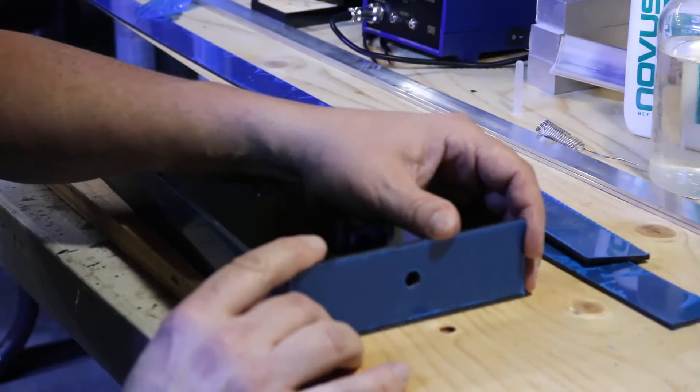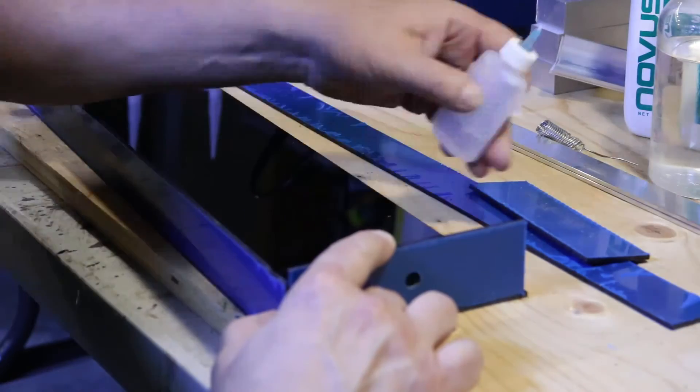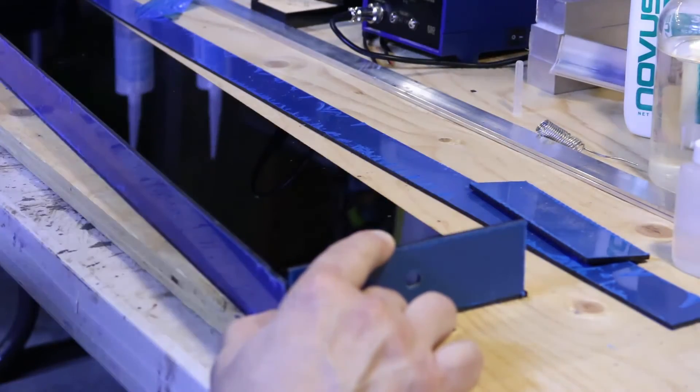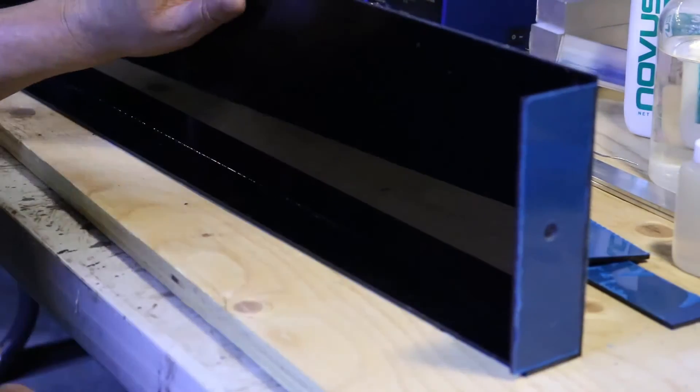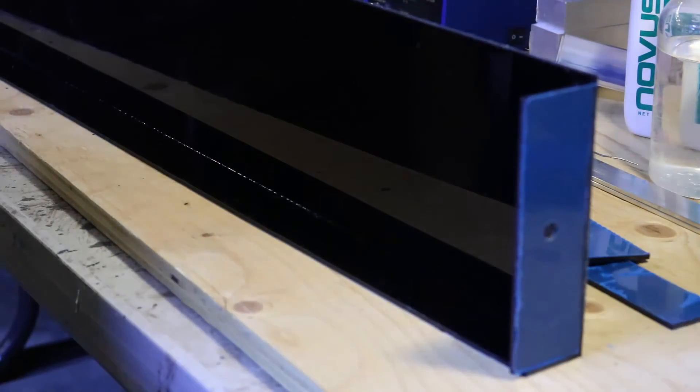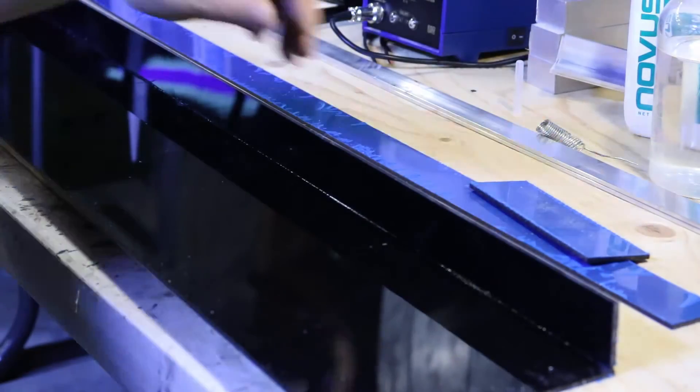And you'll notice here I have a little bit of an extra lip on this end piece. That's because this canopy is going to be sitting on top of a glass top. And I want it to have a safety guard so it doesn't slide off onto the floor or whatever. So it can't slide in either direction.